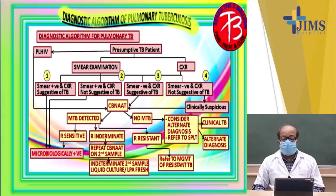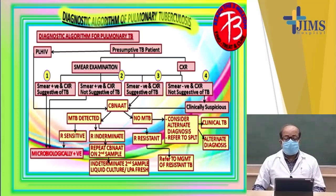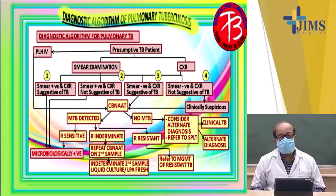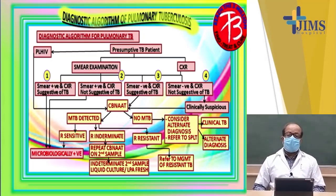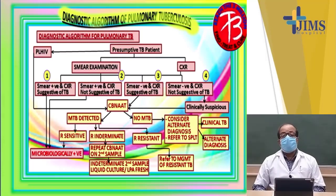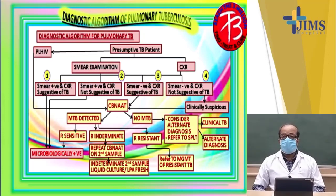This slide shows the algorithm of pulmonary tuberculosis diagnostics. There are four marked points. First, a presumptive TB patient who is a PLHIV is directed for the CBNAAT test — cartridge-based nucleic acid amplification test — which can diagnose tuberculosis without failure. For presumptive TB patients who are not HIV positive, they are subjected to two tests: smear examination and chest x-ray. If smear positive and chest x-ray positive, they are microbiologically positive and subjected to treatment. If smear positive but chest x-ray negative, they are still taken as microbiologically positive and subjected to treatment.